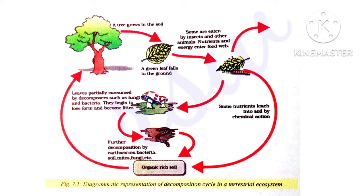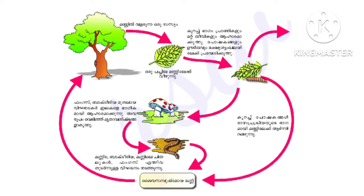Further decomposition occurs by earthworms, bacteria, soil organisms, termites, fungi, etc., and forms the organic-rich soil in which plants are growing again. This completes the decomposition cycle.